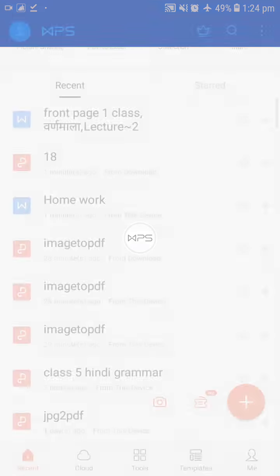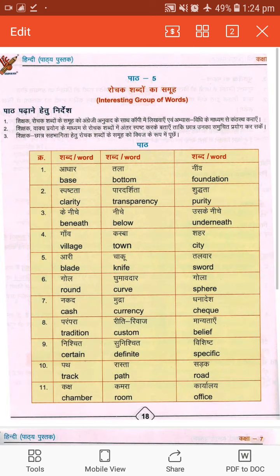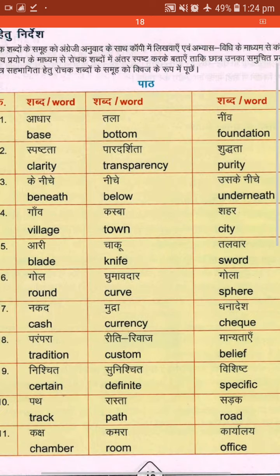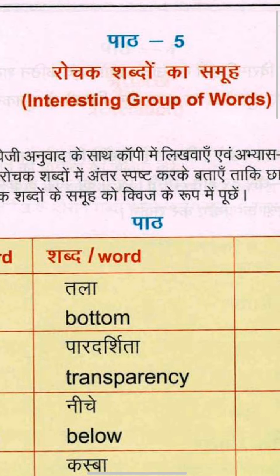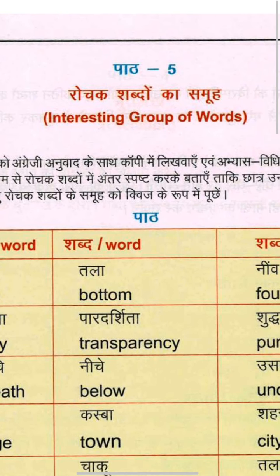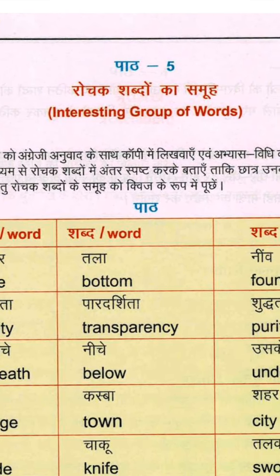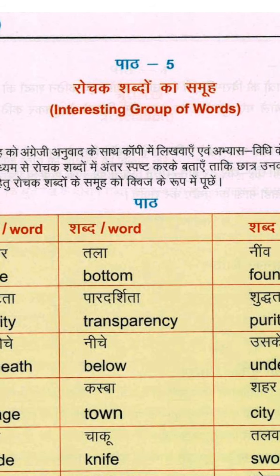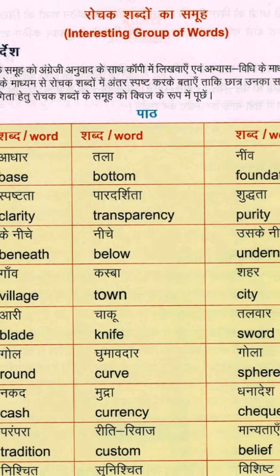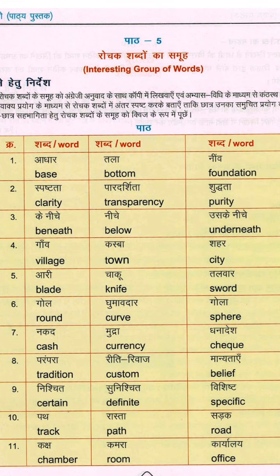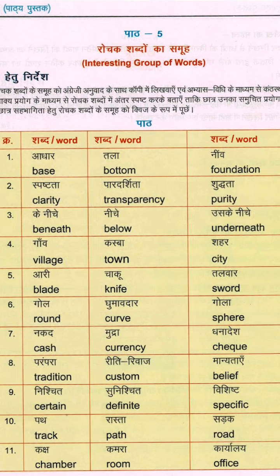Chapter number 5th. This is Chapter 5 and the name of this chapter is 'Rochak Shabdo Ka Samuha', meaning Interesting Group of Words. We will read some interesting words that are used daily.